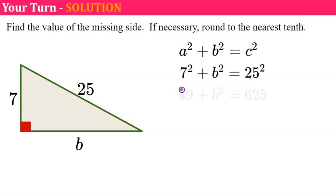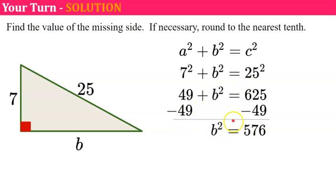7 squared is 49 plus b squared and 25 squared is 625. Now I need to get b squared alone. So I'm going to subtract 49 from each side, zero pair, giving me b squared and 625 subtract 49 is 576.